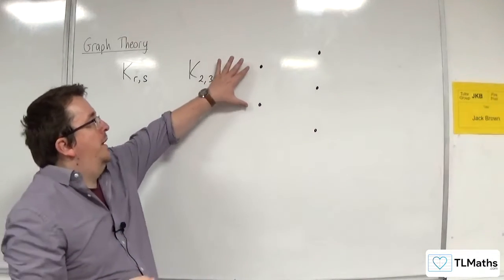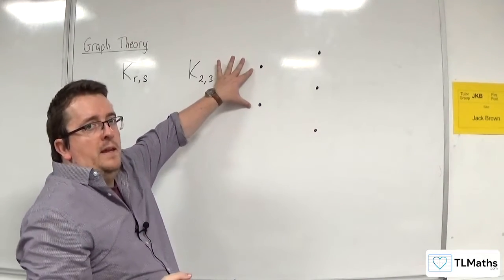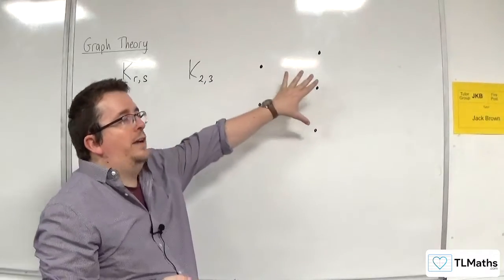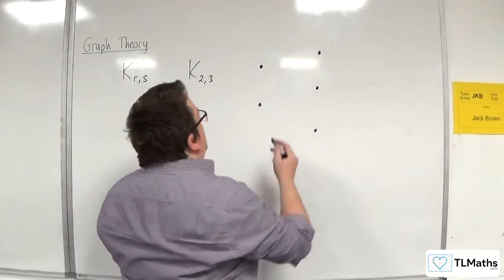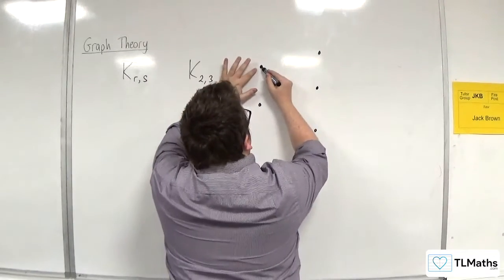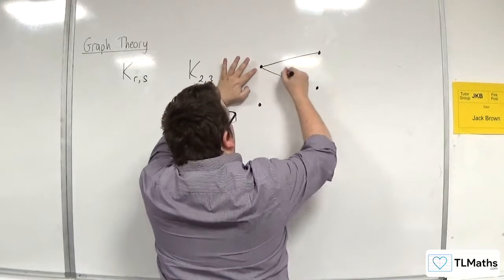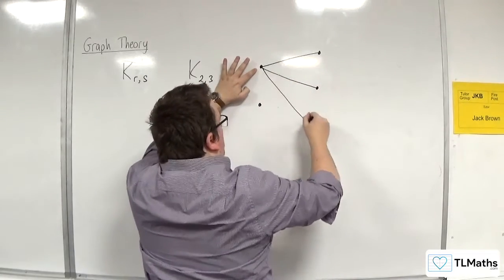And every vertex on the left must be matched up with every vertex on the right. So there must be a direct path. So this one must connect with that one, that one, and that one.